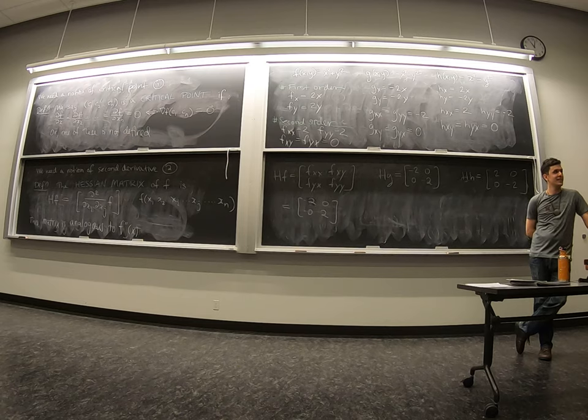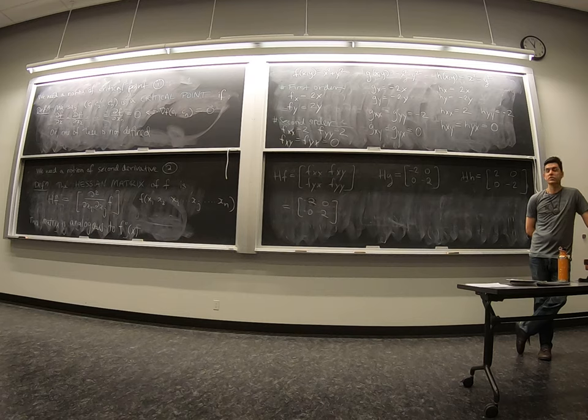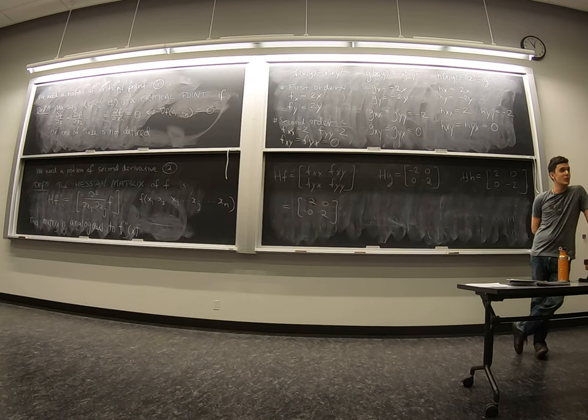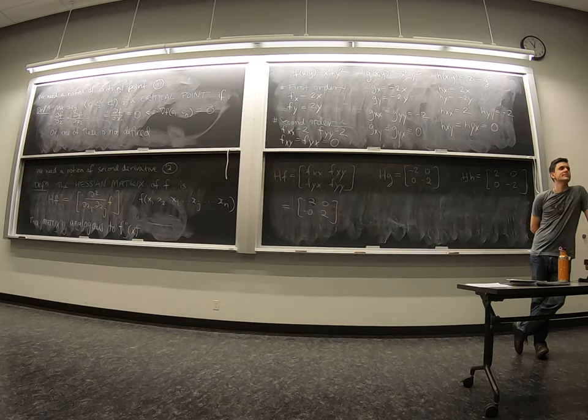So what if we did x cubed plus y cubed, and we take the second-order derivatives? Yeah, that's a great question. So I guess you'd get 6x, 0, 0, 6y. So it doesn't have to be a straight value.